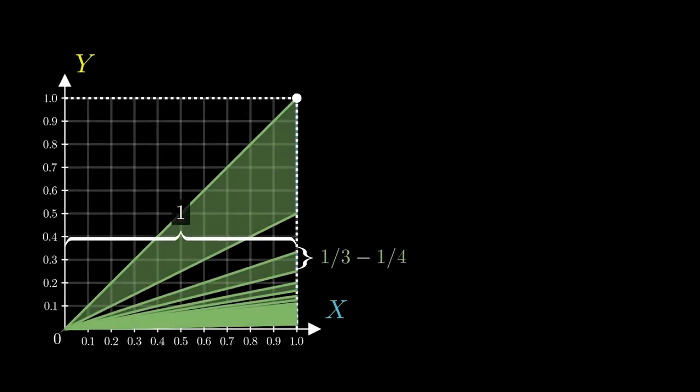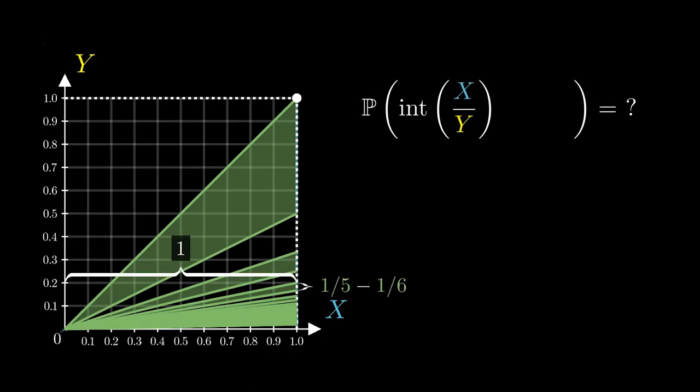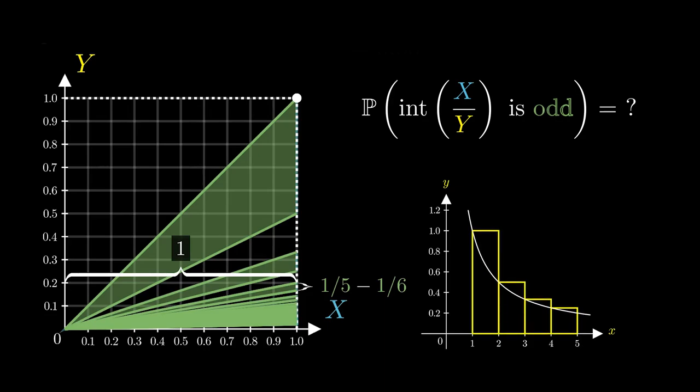This strange green diagram actually solves this strange probability problem via some strange techniques in real analysis. What is this probability problem?